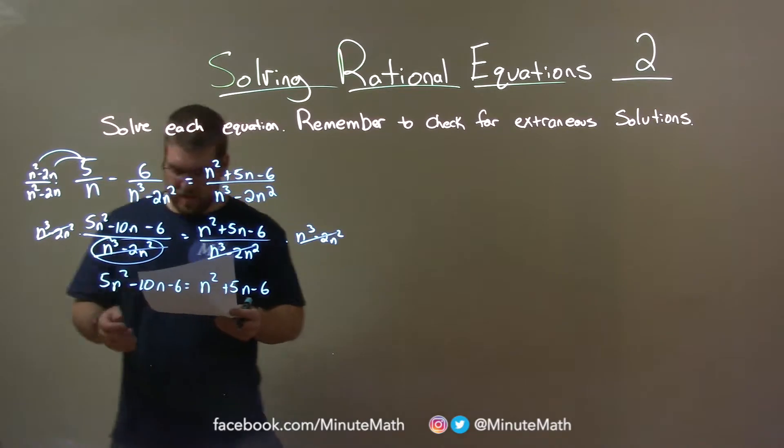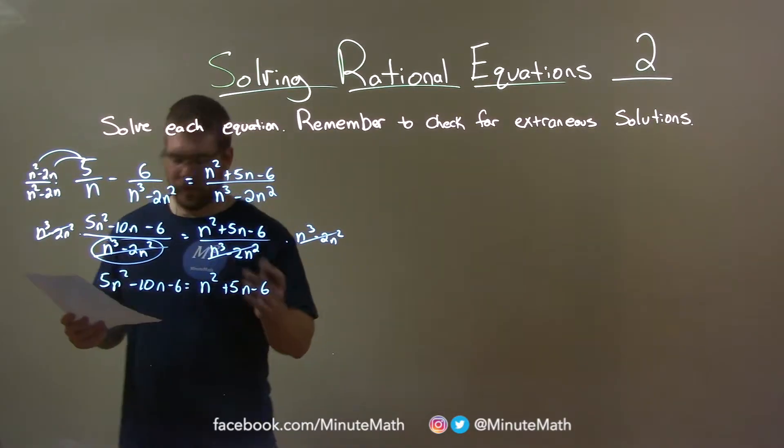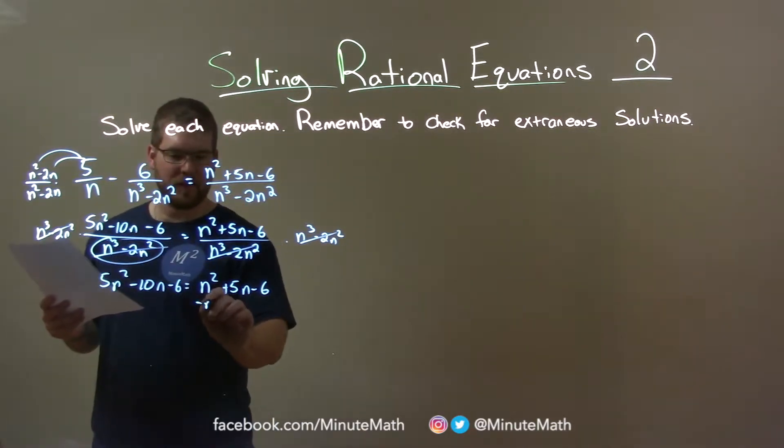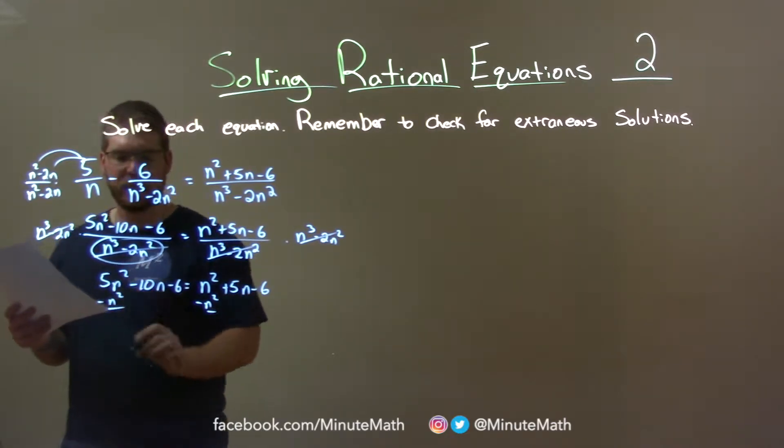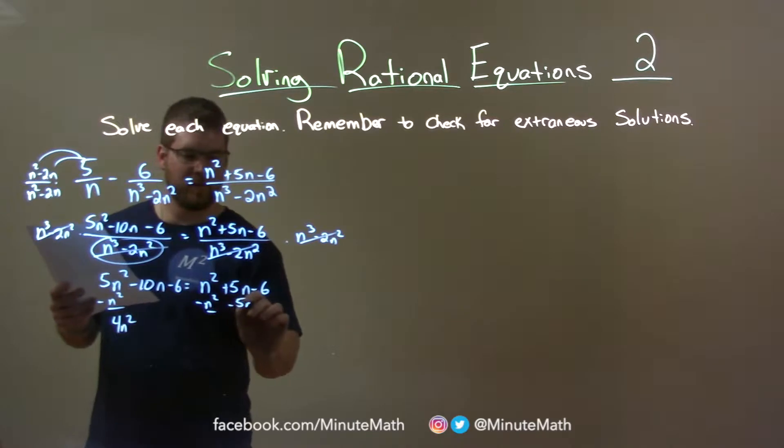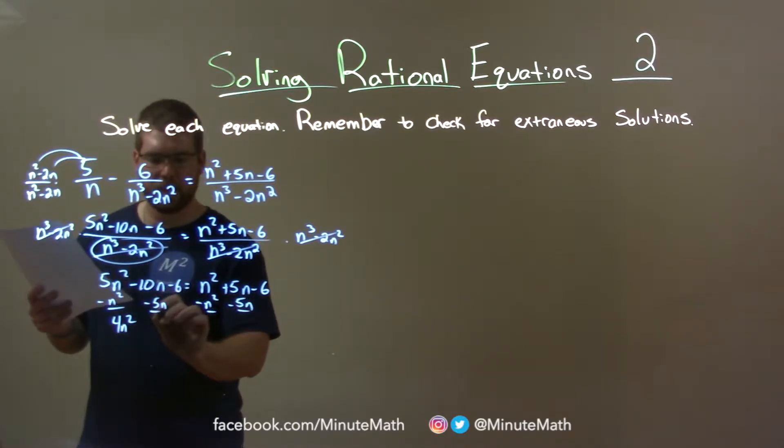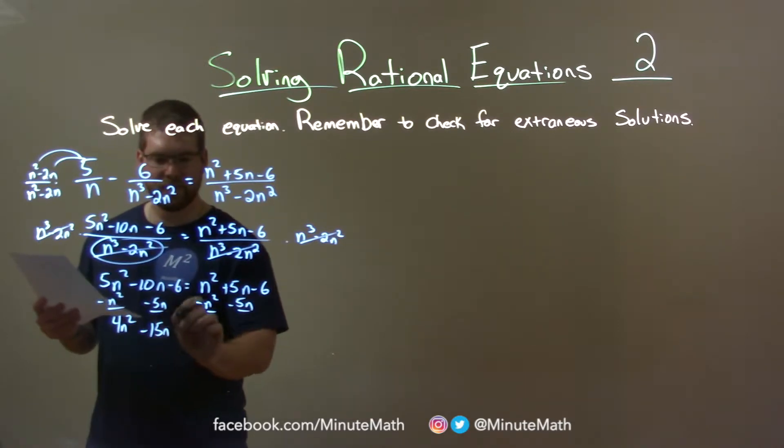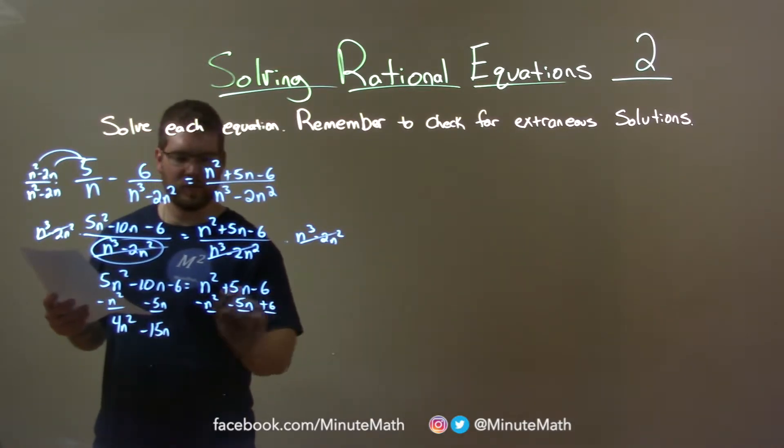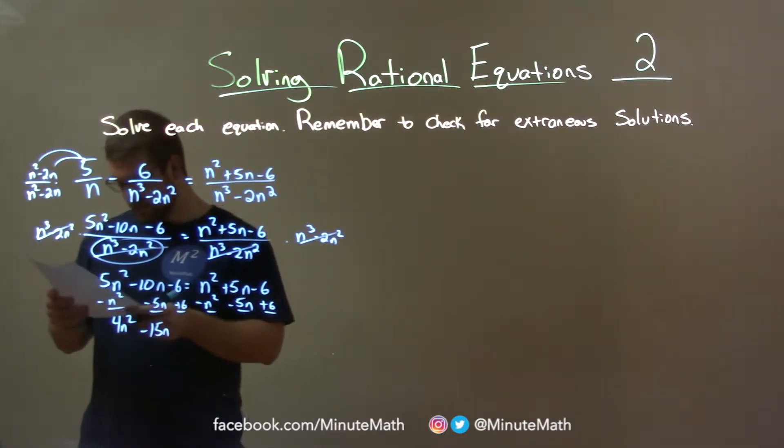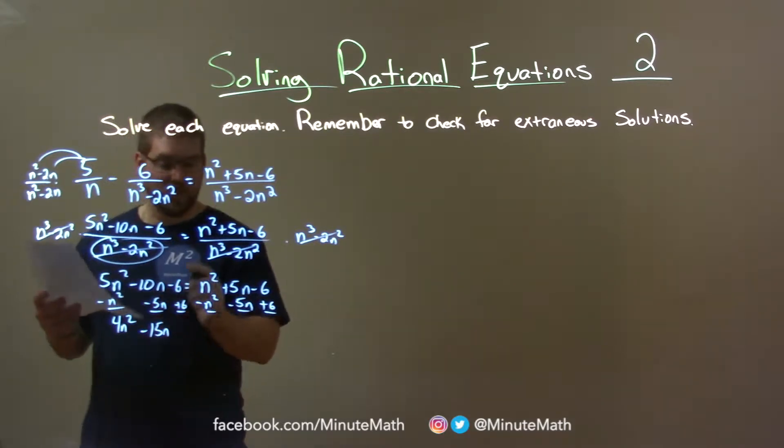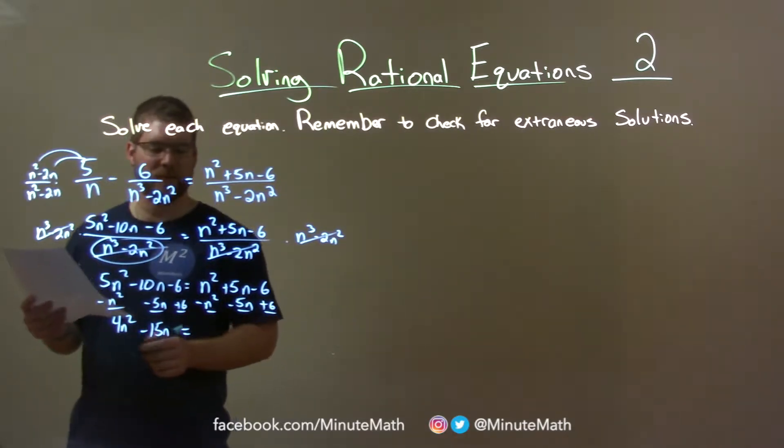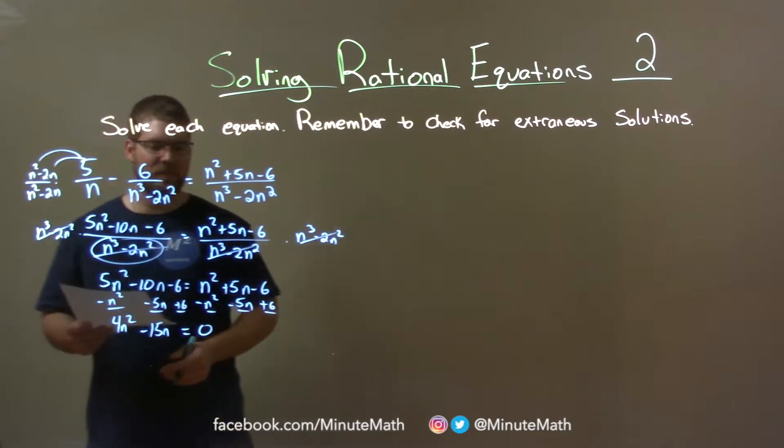Now let's bring everything we can over to the left. Subtract n squared: 5n squared minus n squared is 4n squared. Subtract 5n from both sides: minus 10n minus 5n is minus 15n. Add 6 to both sides: negative 6 plus 6 is 0.